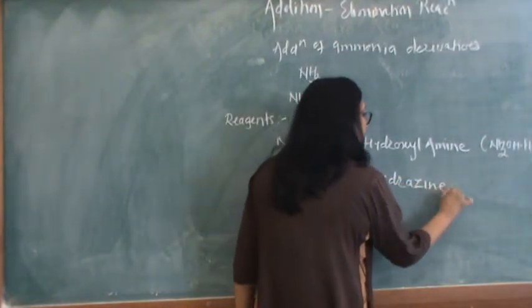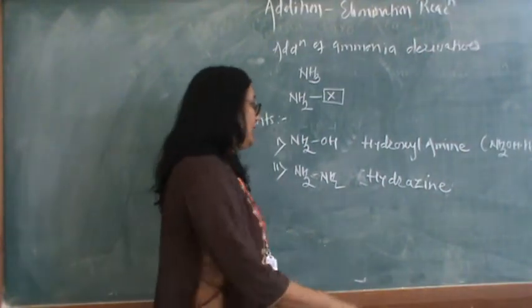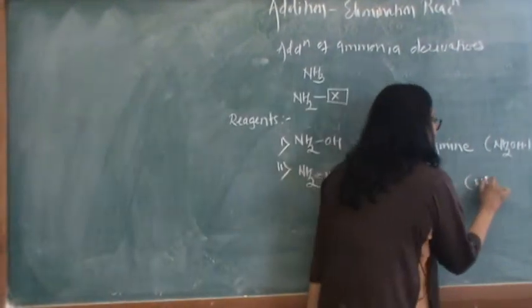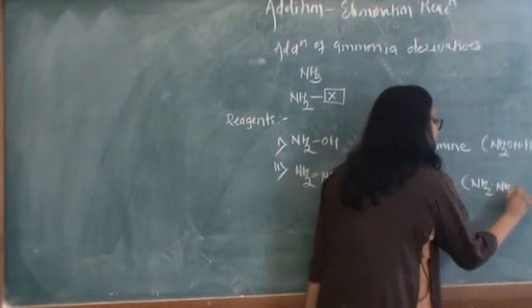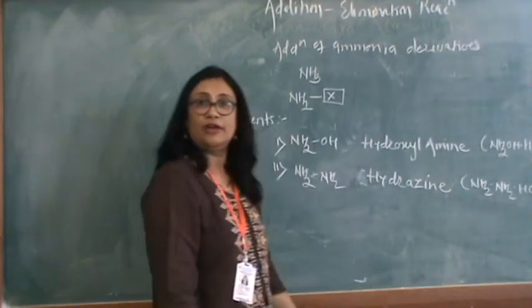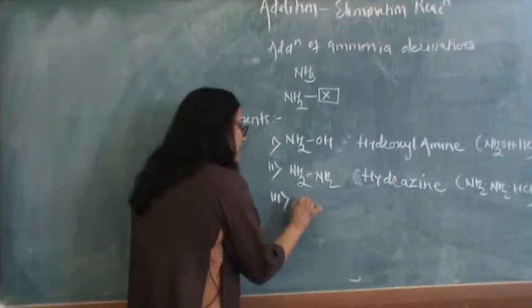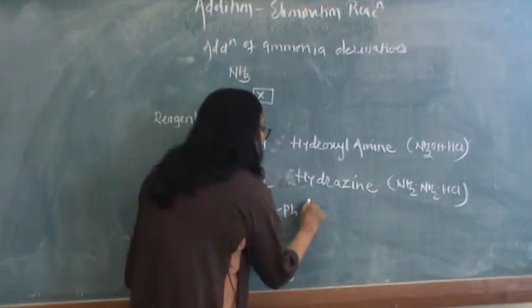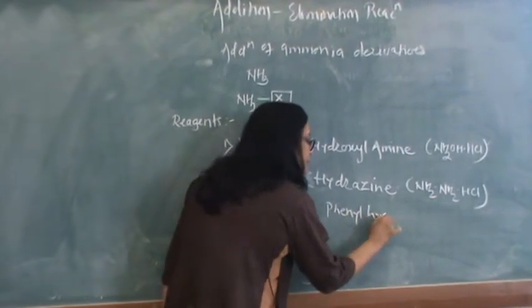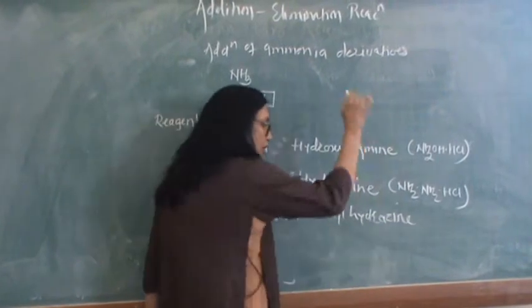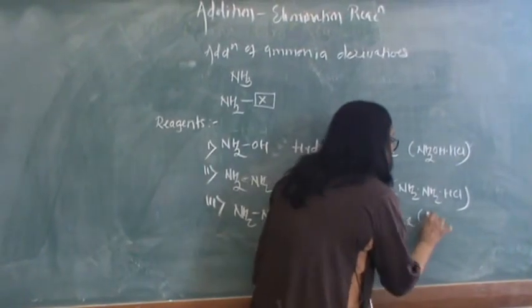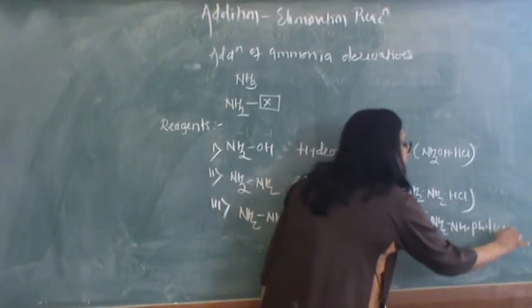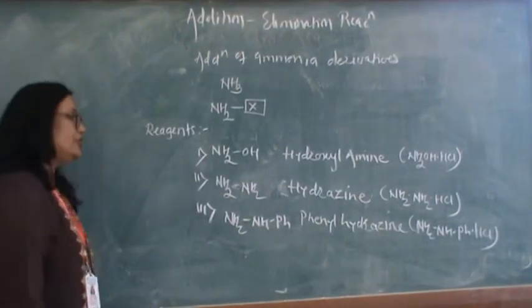If you want to prepare a hydrazone derivative of aldehyde or ketone, this particular reagent is used. It is also available in the form of its salt, that is hydroxylamine hydrochloride. Then there is another molecule NH2NHPh, that is called as phenylhydrazine, or it also exists in its salt form NH2NHPhCl, phenylhydrazine hydrochloride.